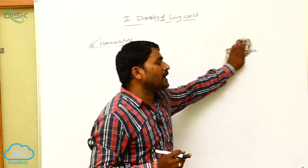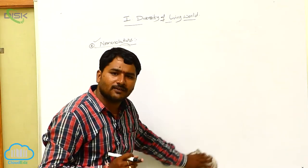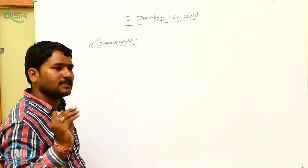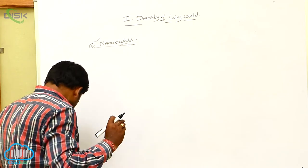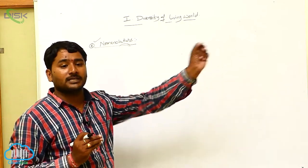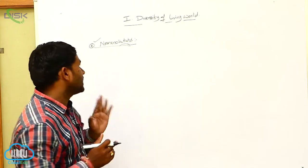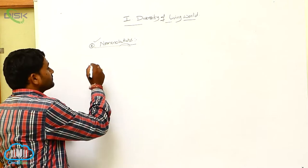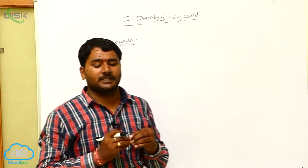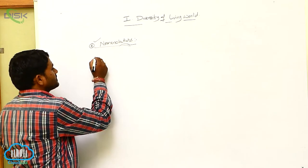In spite of local names or regional names, each and every organism should have a universally accepted name. That universally accepted name is known as a scientific name. Let's see how many types of nomenclature there are, as there are different types of nomenclatures.